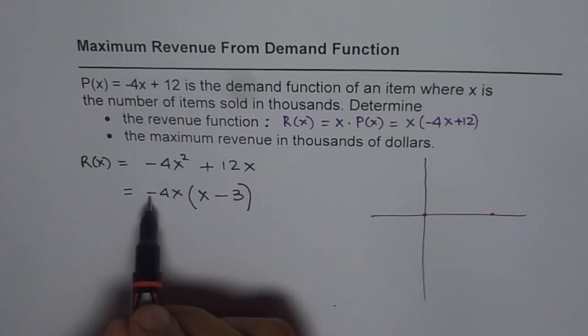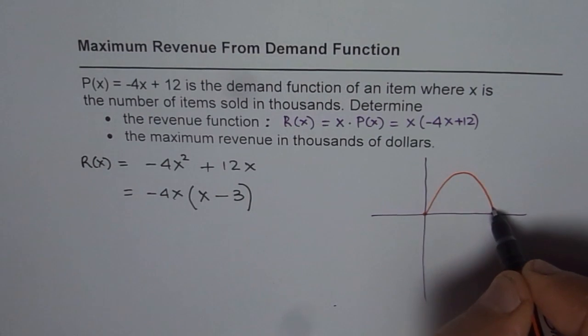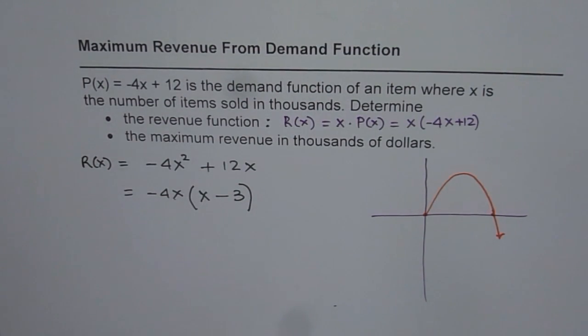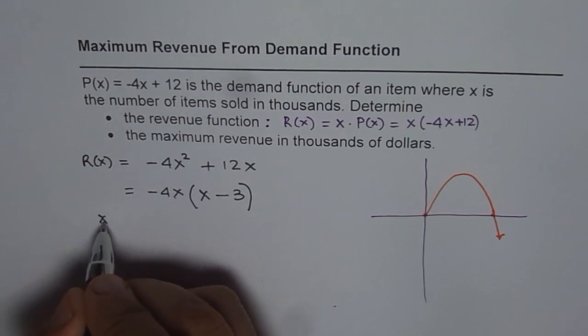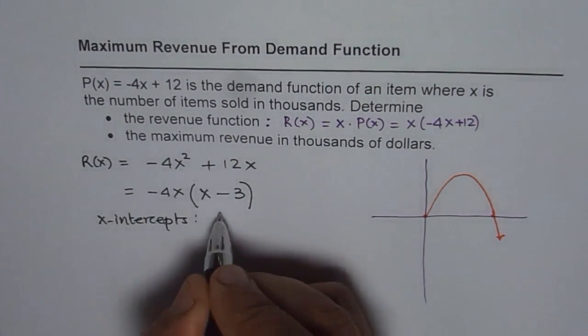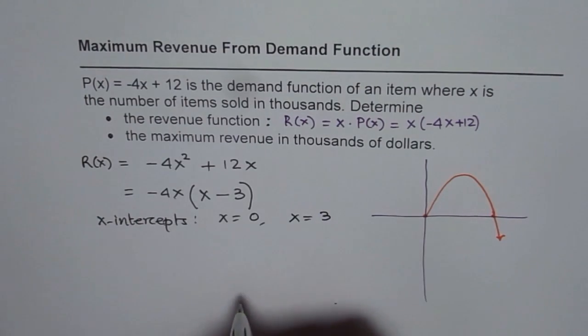Now since it is negative, it is going to go in this fashion, correct? Let's go like this. Okay. So what we see here is that we have two x-intercepts and these are at x = 0 and at x = +3.